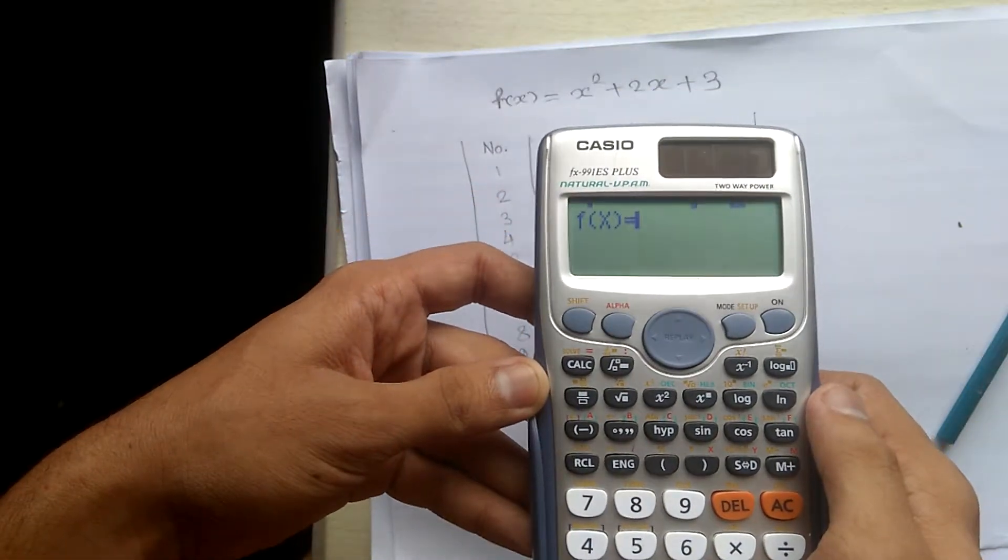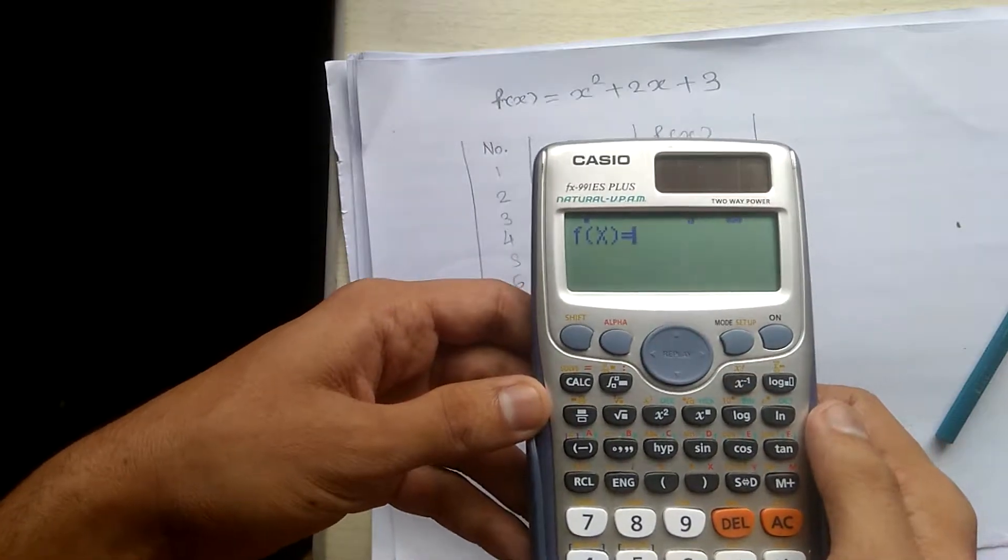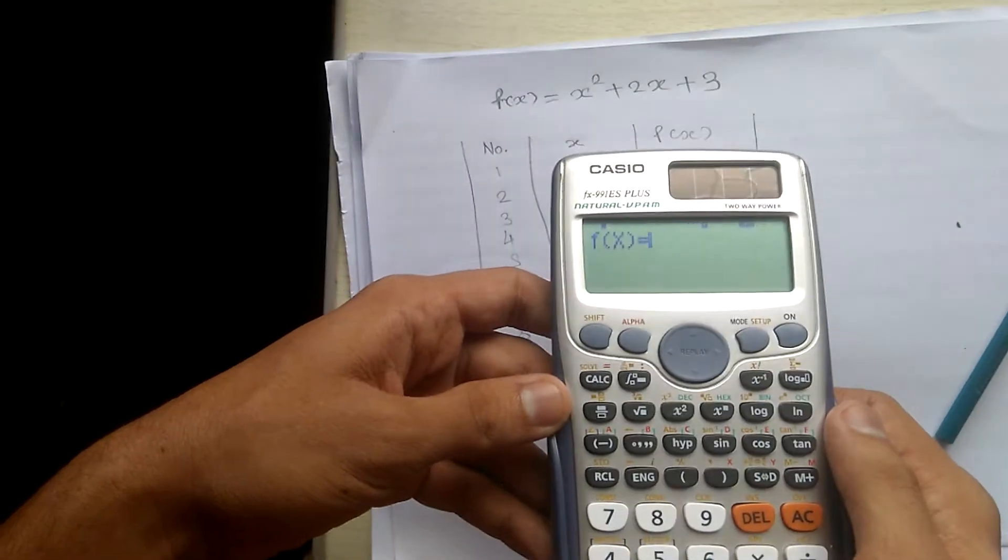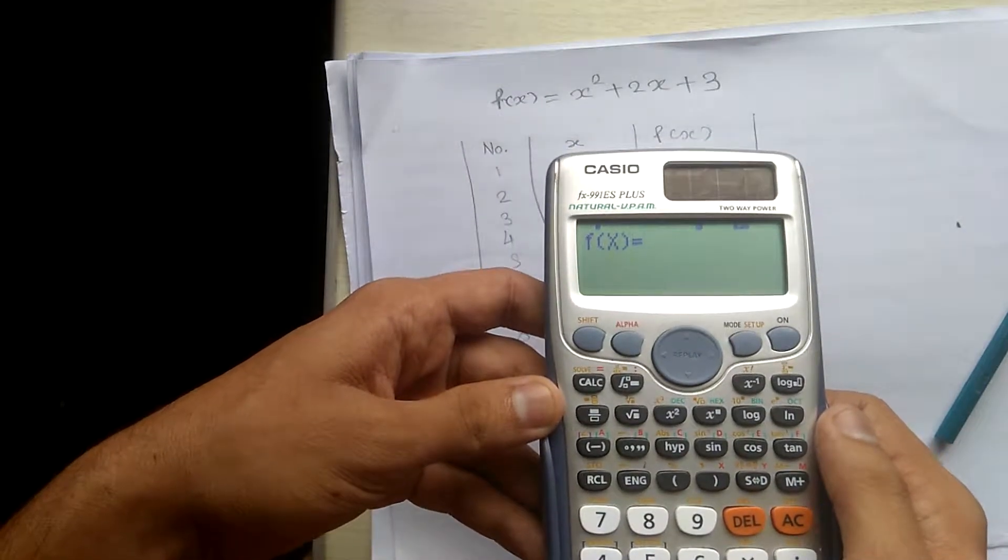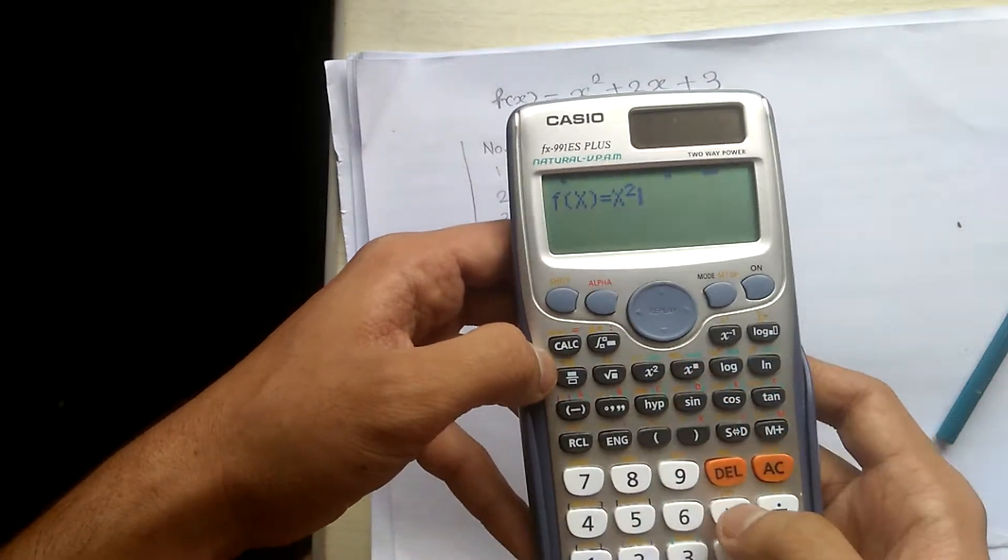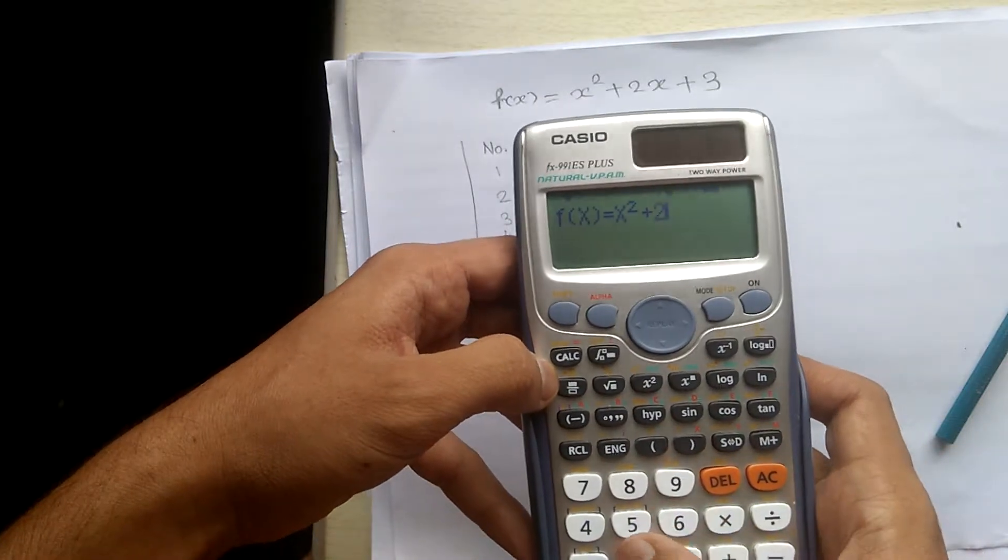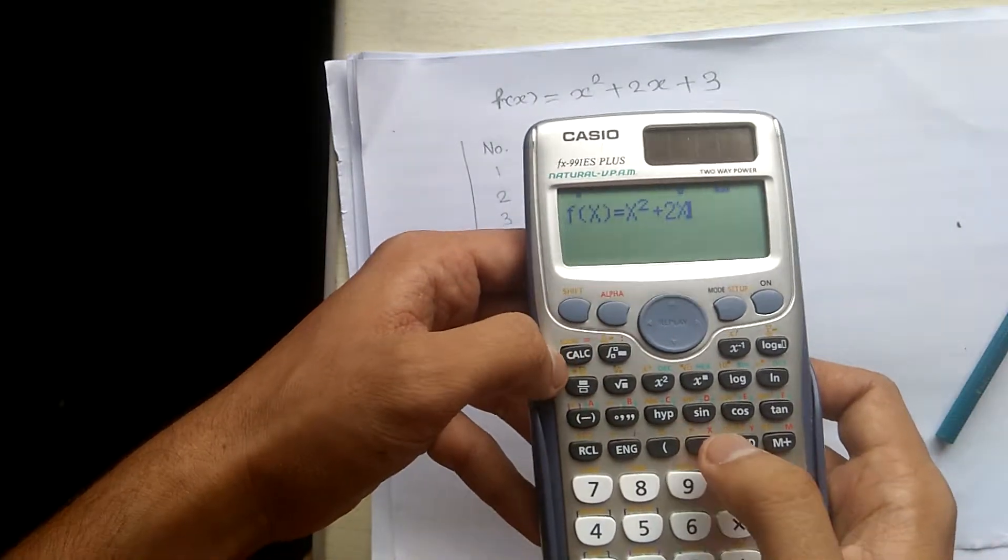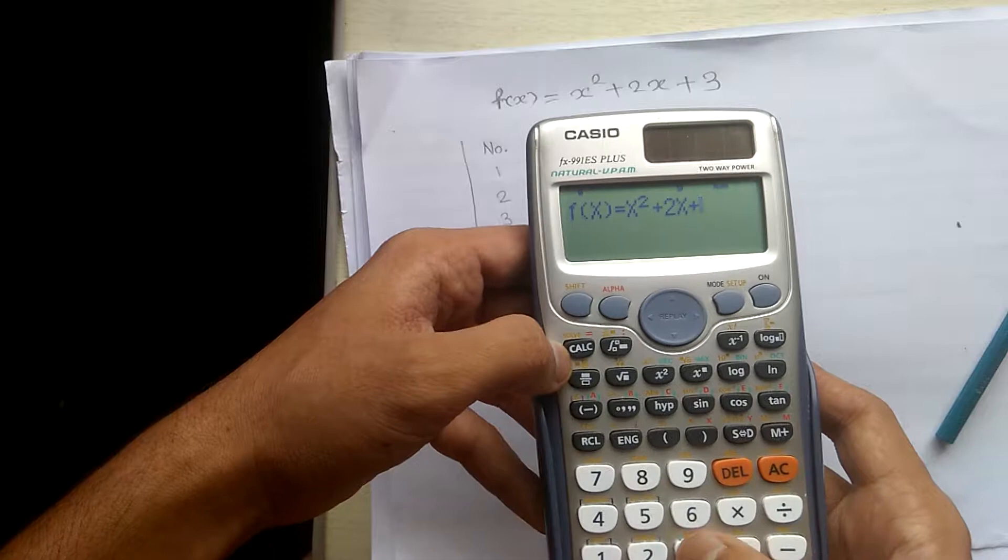We get f(x) equals, so we have to put the equation into the calculator. I have the equation of x² + 2x + 3. So alpha x square plus 2 into alpha x plus 3.